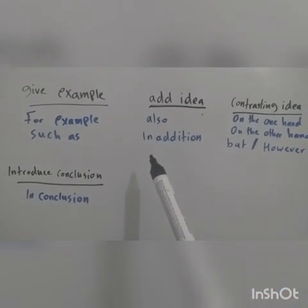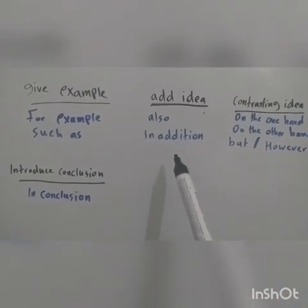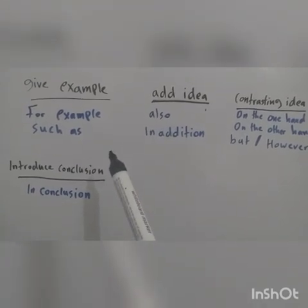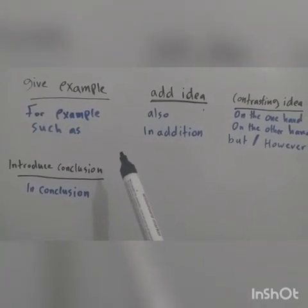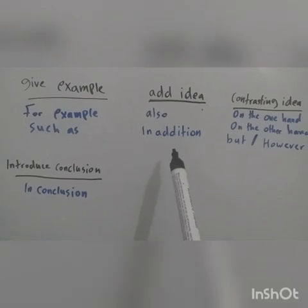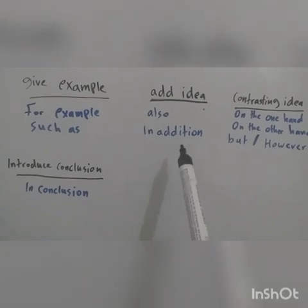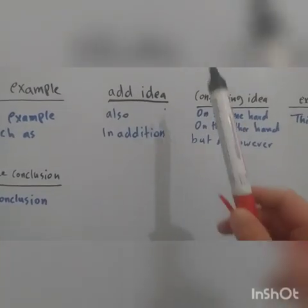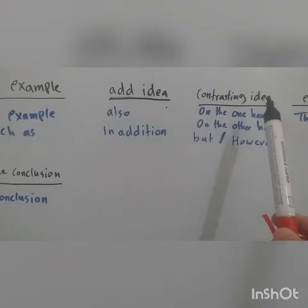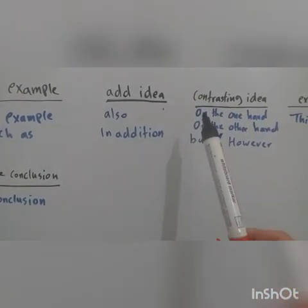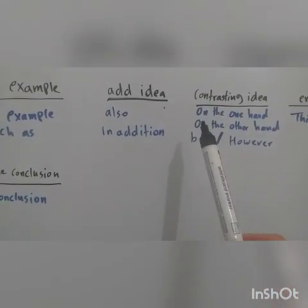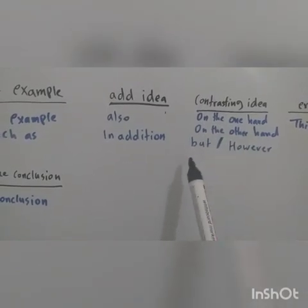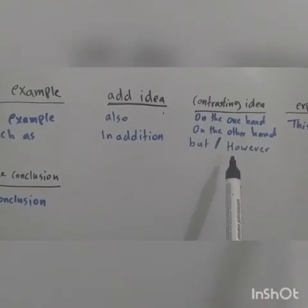To add ideas, you use the expressions 'also' and 'in addition.' For example: 'The internet is very bad for your health. For example, it causes many problems in your spine. In addition, it could hurt your eyes.' You also have to add a contrasting idea. You use the expressions 'on the one hand,' 'on the other hand,' 'but,' or 'however.'